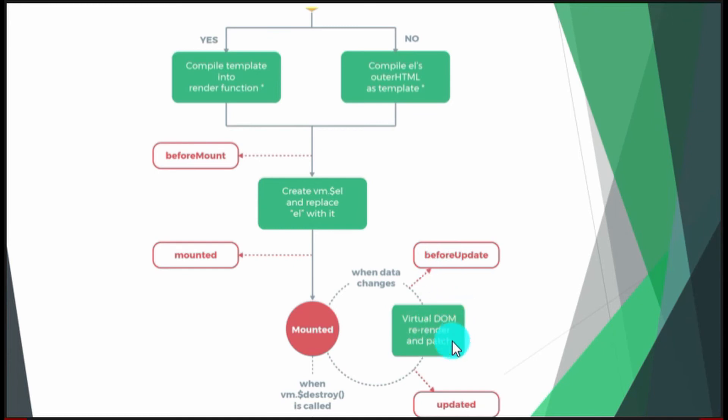Before update, if there's any code you want to implement, you can add it there. Then what happens with the virtual DOM: re-render and patch. If you change the data and you have a directive like v-if, depending on the truthness of the value, that DOM might be taken off or present itself with new or changed data. When it's done, the view gets updated. You can have another lifecycle hook here where you can put in your code.